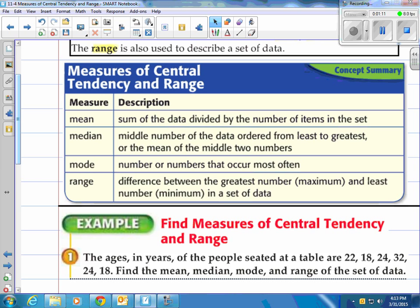Then range is the difference between the greatest number, the highest number, the maximum, and the least number, the minimum, in the set of data. Or as I like to say, high minus low.